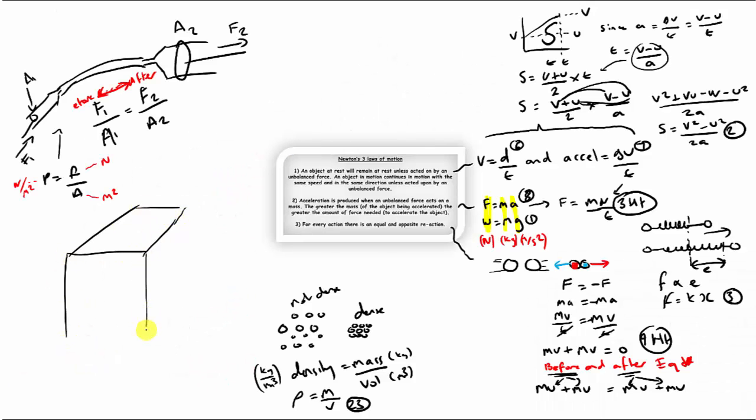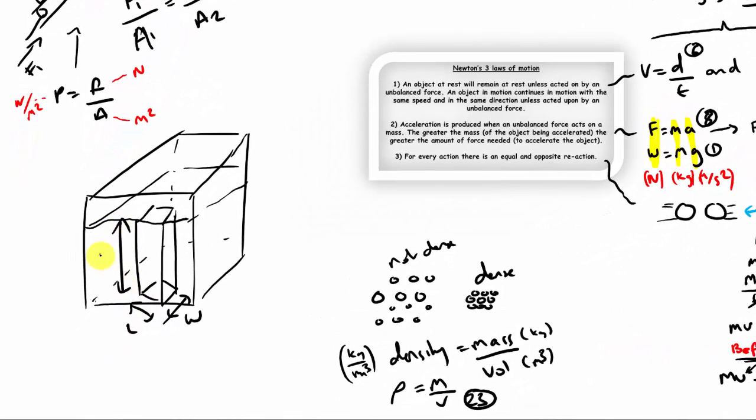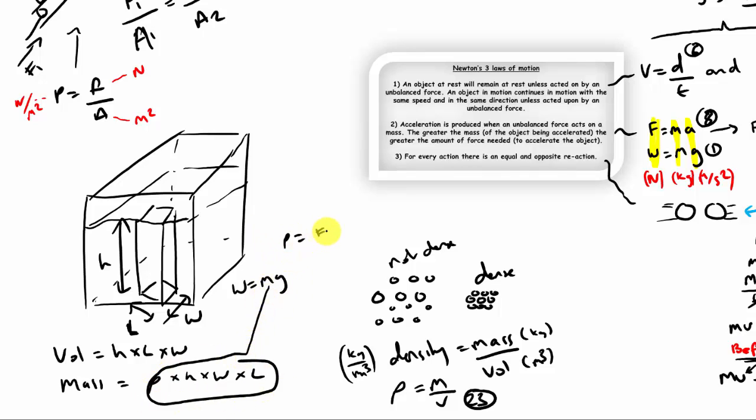Now pressure does not just happen in solids, you also have pressure due to fluids. So fluids include liquids and gases. And we're in an atmosphere right now. If you're in a fish tank, you would have a column of fluid above you. And that mass of fluid would be worked out, or you could calculate it from the density equation. Rearranging for mass, mass equals density times volume. The volume of this fluid would be height times length times width times the density would give you the mass. Since weight equals mass times gravity, we can combine these equations.